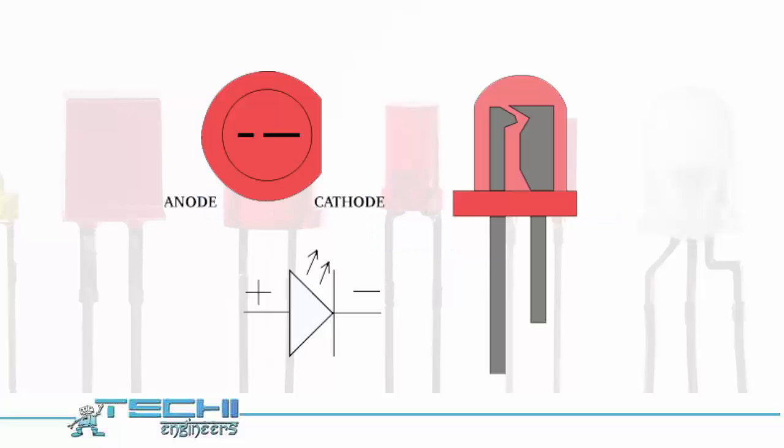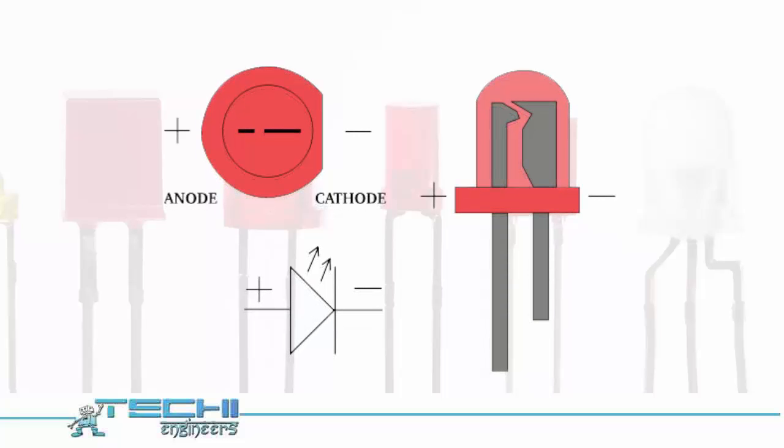This is the internal figure of LED. In the internal diagram, small part is positive and bigger part is negative.